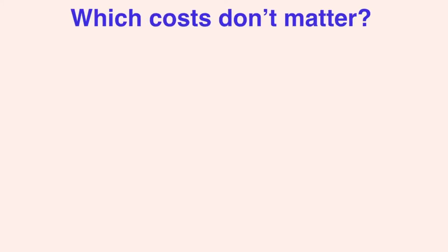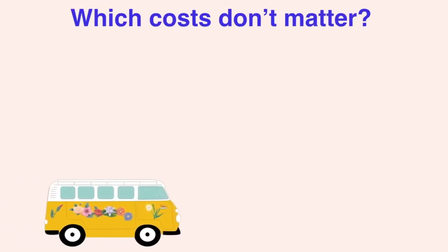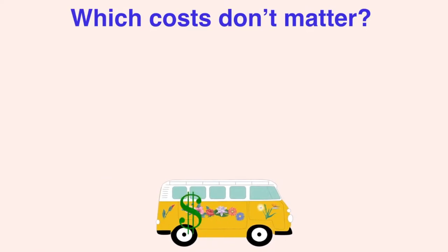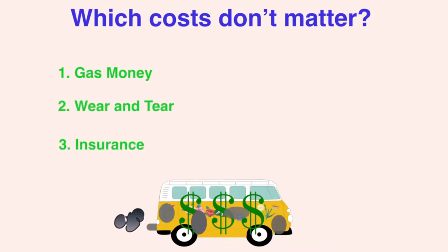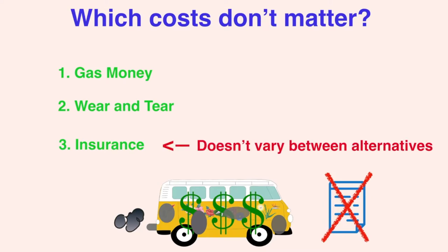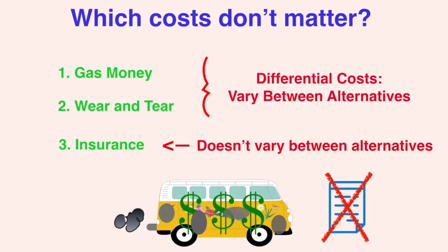First, let's talk about the costs that don't matter. Let's say you and your friends are planning a two-week road trip in your car. How much is that going to cost? You'll need to pay for gas money, and you should also consider the cost of wear and tear on the car. You pay $300 per month for car insurance, so that's $150 for two weeks — but hold on. Wouldn't you be paying for car insurance anyway? That cost is not relevant to the decision, since it doesn't vary between the alternatives. You have to pay it regardless of whether or not you take the trip. The costs relevant to calculating net present value are differential costs — costs that vary between alternatives. If an investment decision won't change a particular cost, we shouldn't factor it in.